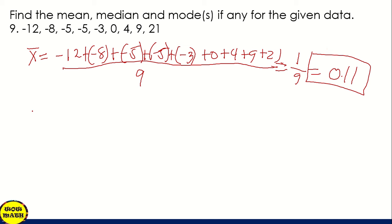Next, the median. We're going to arrange first from lowest to highest. I think it's already arranged. It's already arranged na. So we just copy: negative 12, negative 8, negative 5, negative 5, negative 3, 0, 4, 9, 21. But since odd number yung given natin, we only have one middle value. So hanapin lang natin and that will be our median, and that is negative 3. The median is negative 3.